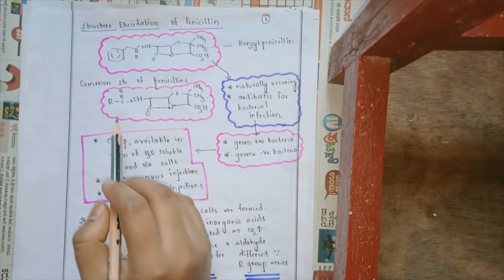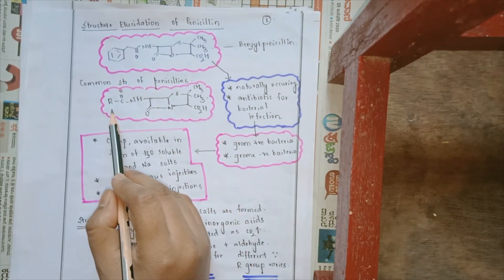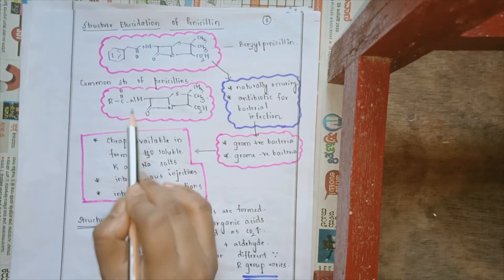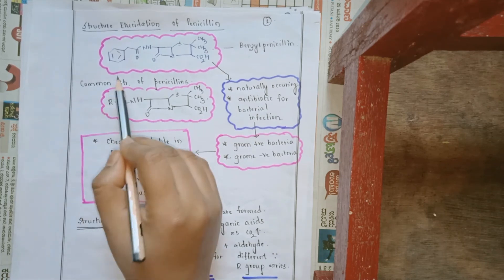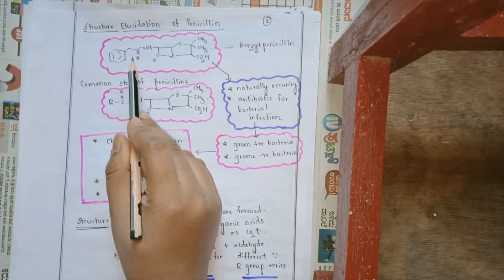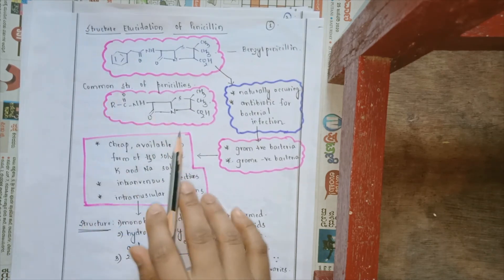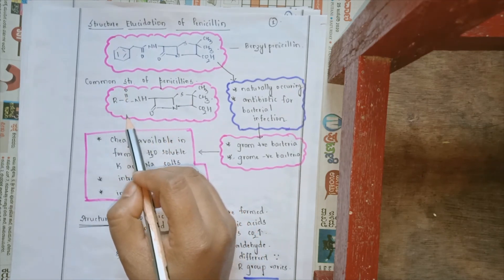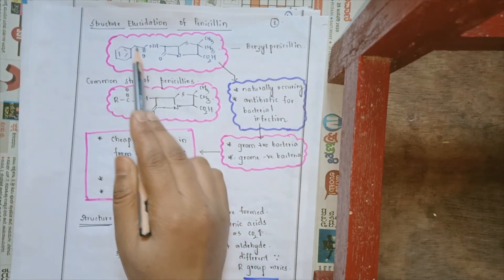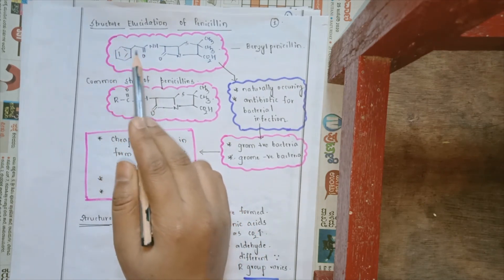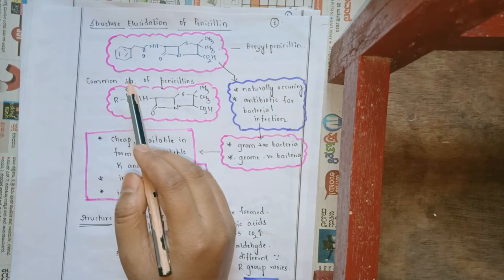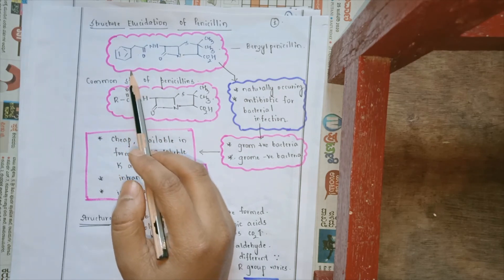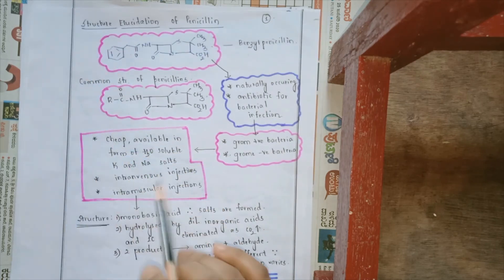The common structure of penicillin is R-CO-NH. For benzyl penicillin, that R group is C6H5CH2. Depending on this R group, the category of penicillin we will be doing structure elucidation for would be benzyl penicillin.